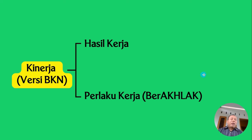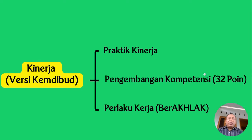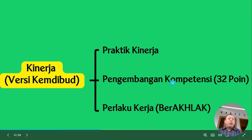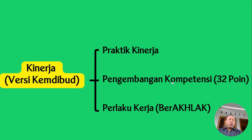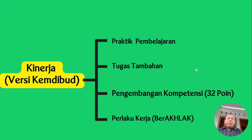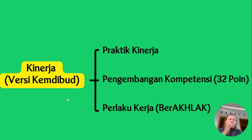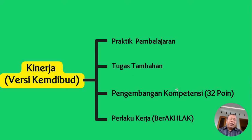Kemudian Kemendikbud Ristek menambahkan satu komponen dari kinerja, yaitu pengembangan kompetensi. Semula ada dua komponen, ditambah satu, yaitu pengembangan kompetensi, di mana guru atau kepala sekolah diharapkan mengumpulkan minimal 32 poin. Istilah hasil kerja diubah menjadi praktik kinerja, esensinya tetap sama. Untuk kepala sekolah ada tiga komponen: praktik kinerja, pengembangan kompetensi, dan perilaku kerja. Untuk guru ada empat: praktik pembelajaran, tugas tambahan, pengembangan kompetensi, dan perilaku kerja.